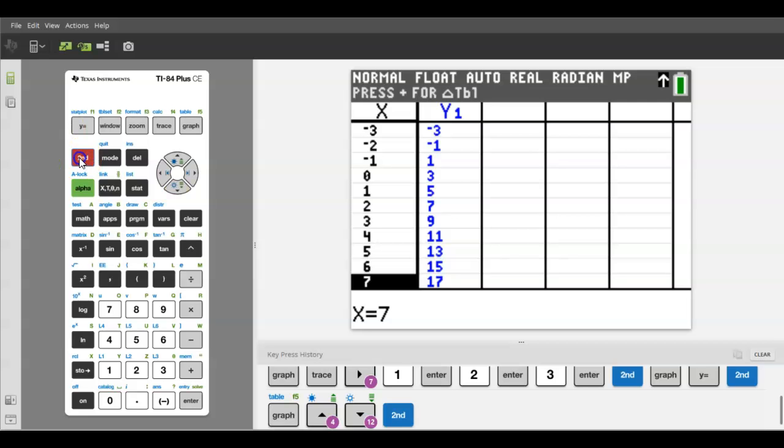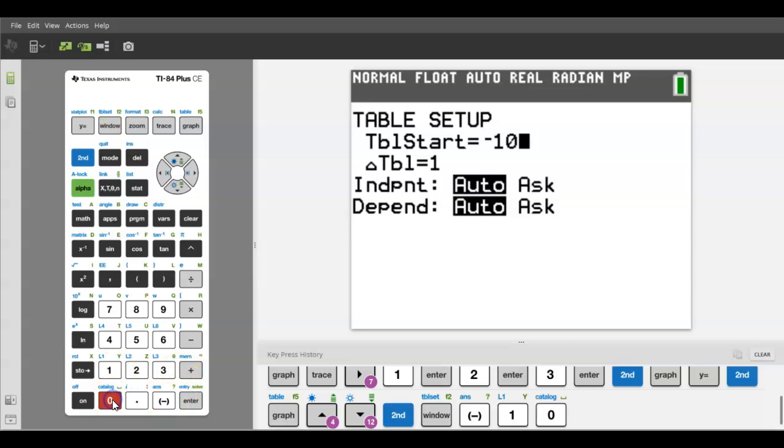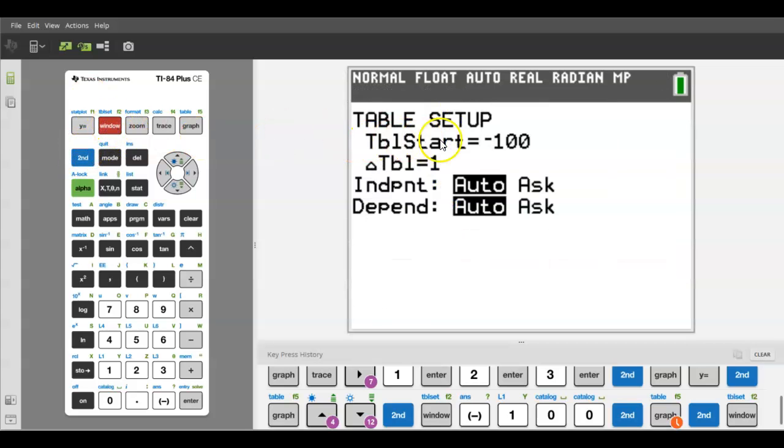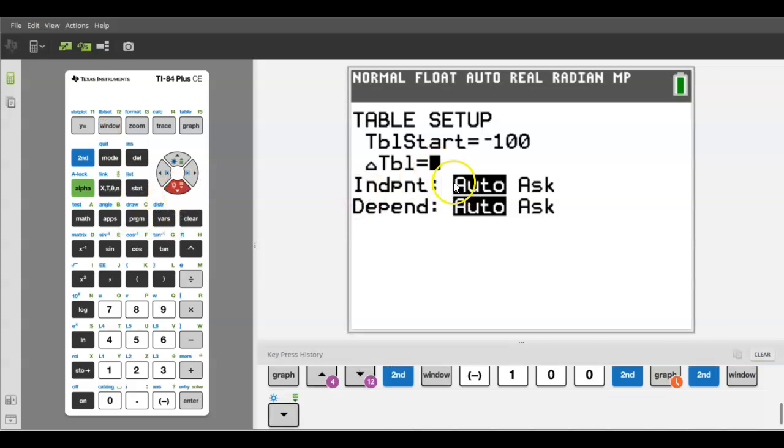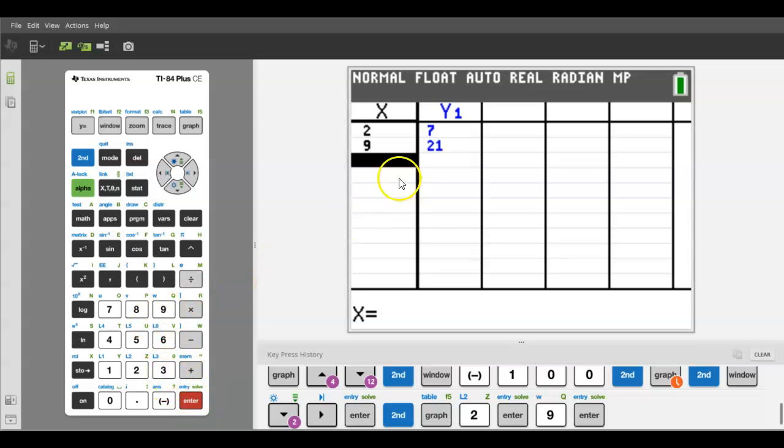To change the table, there are a couple of different things you can do. You see where it says table set? If I hit second window, this says where do you want your table to start. Let's say the teacher asked me for f of negative 100 - I don't want to scroll all the way to negative 100, but I can put negative 100 right here. When I go back to the table, now it's starting at negative 100. Back to table set again, let's say I don't want to go by ones, I want to go by threes. I can change what the x values are going by. Another really useful thing is to change the independent variable to ask. If I go to table now, I can plug in any x value that the teacher asked me to find.